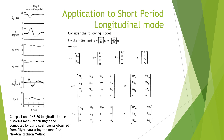So far we have focused only on the lateral directional mode. This minimization technique can also be extended to the short period longitudinal mode. This data was obtained by an XB-70 test aircraft. The graph shows the comparison of XB-70 longitudinal time histories measured in flight and computed by using coefficients obtained from flight data using the Newton-Raphson method. In this case also, the modified Newton-Raphson method converges fast, reducing the number of iterations and computational time, meaning the difference between the actual and computed values of the aircraft response variables is very small.